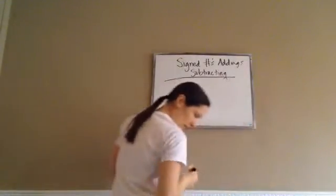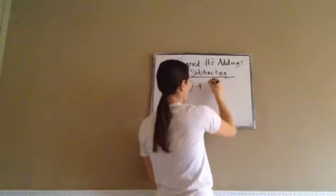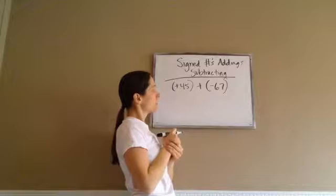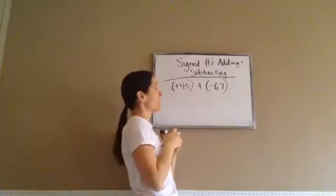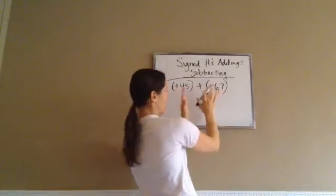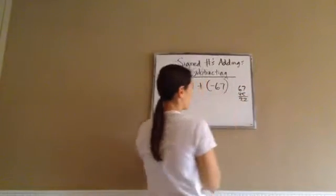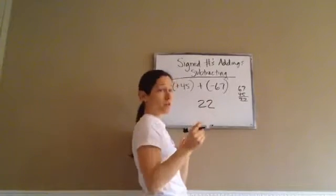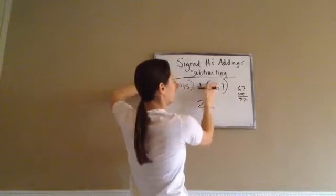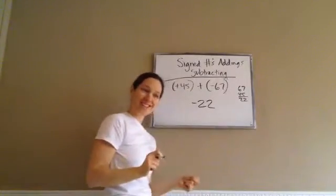Positive 45 plus a negative 67. Same or different? Different. And what is the rule if you have different signs? You subtract. So we're not paying attention to the negative and the positive yet — just subtract the numbers. 67 minus 45 makes 22. Twenty-two is our answer, but once we subtract, you keep the sign with the biggest number. 67 is bigger, and 67 has a negative, so the answer is negative 22.